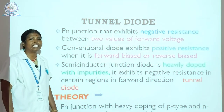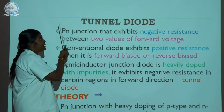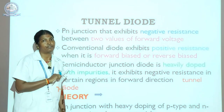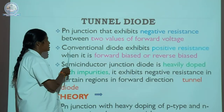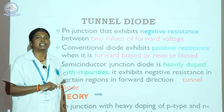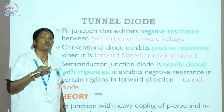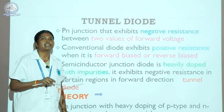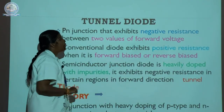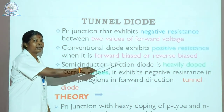Next, we discuss the tunnel diode — the second type of special diode. A PN junction that exhibits negative resistance between two values of forward voltage. The conventional diode allows a large current when the forward voltage is above the threshold voltage, and exhibits positive resistance when forward or reverse biased.